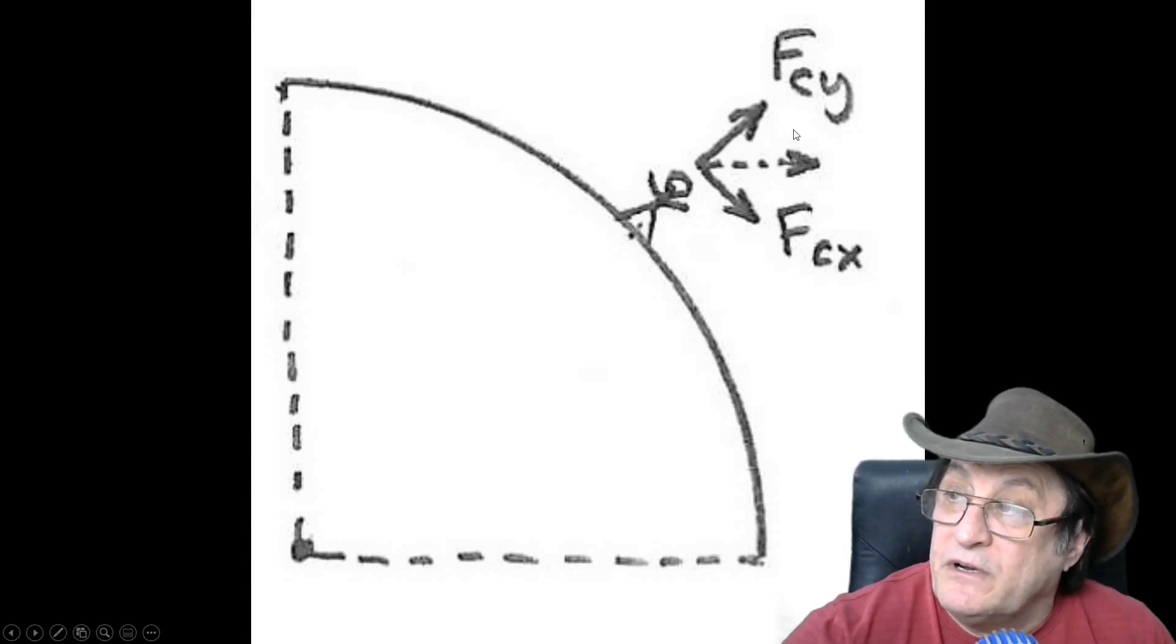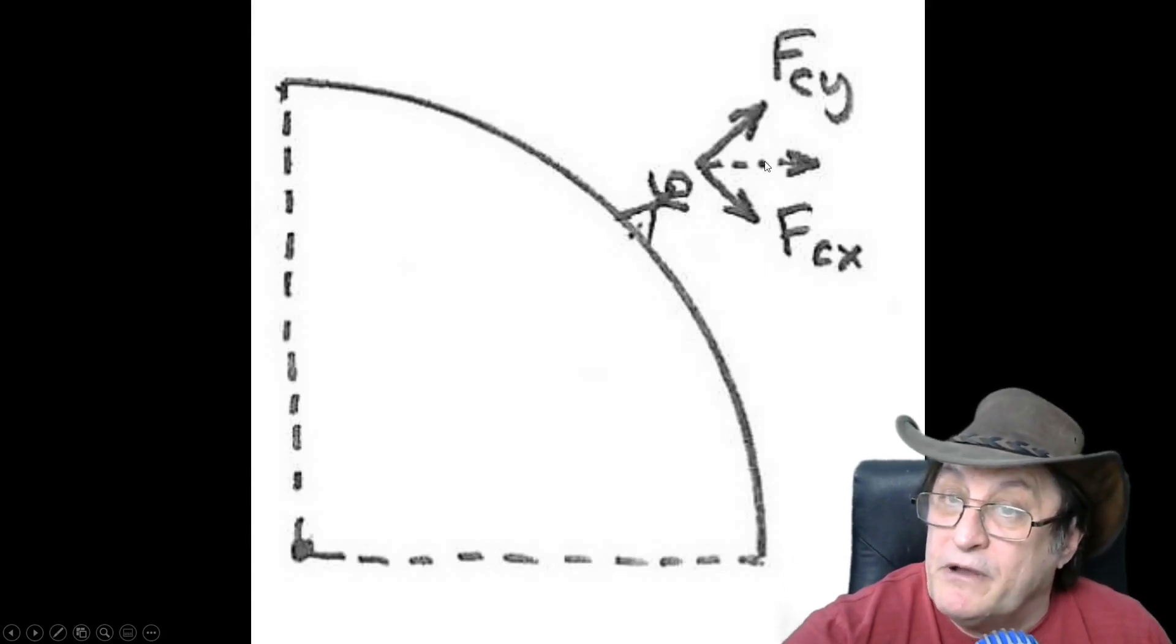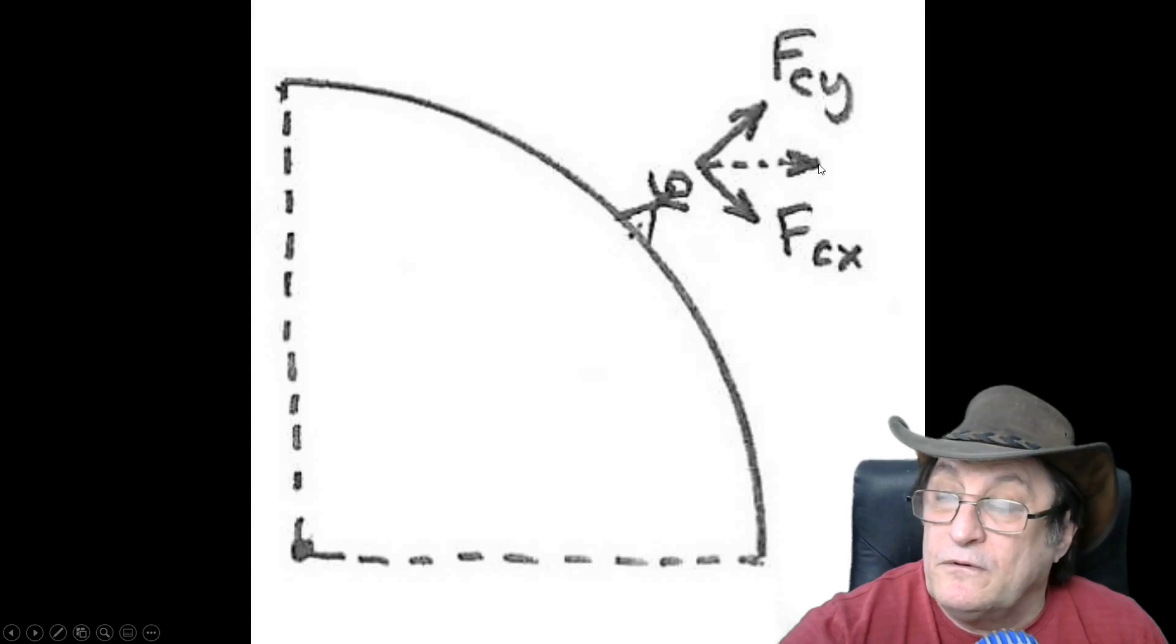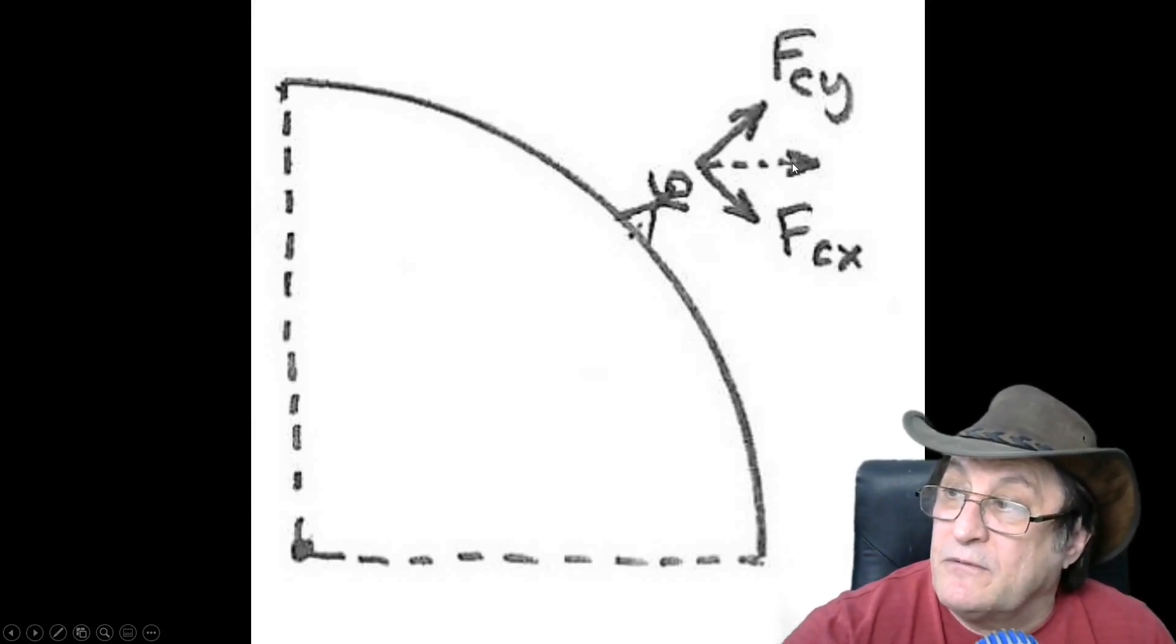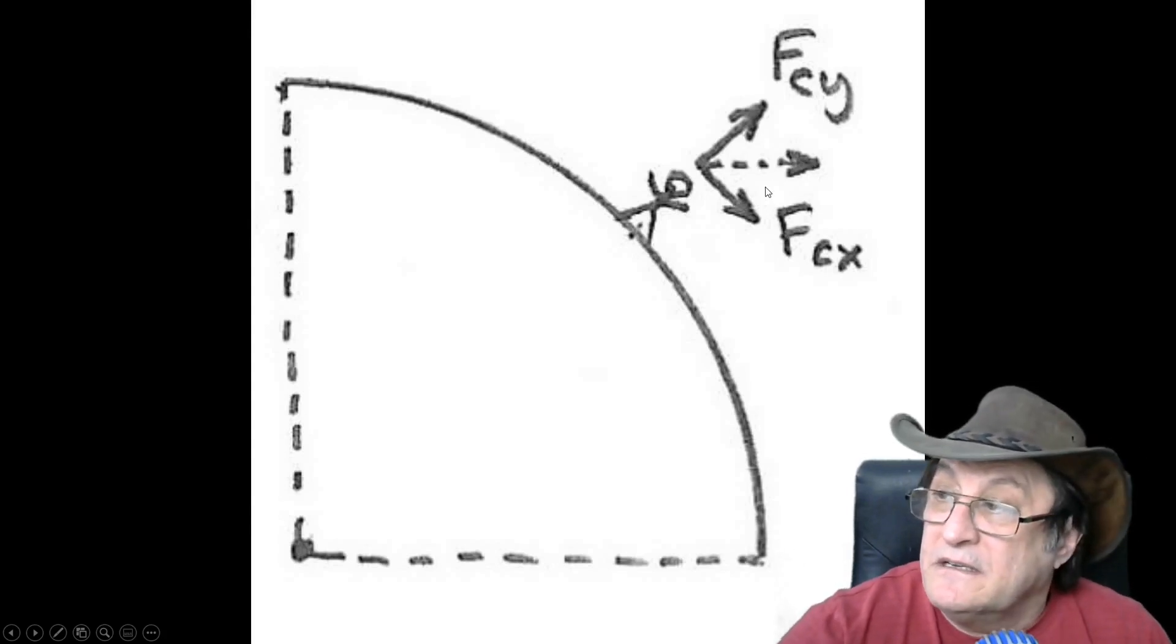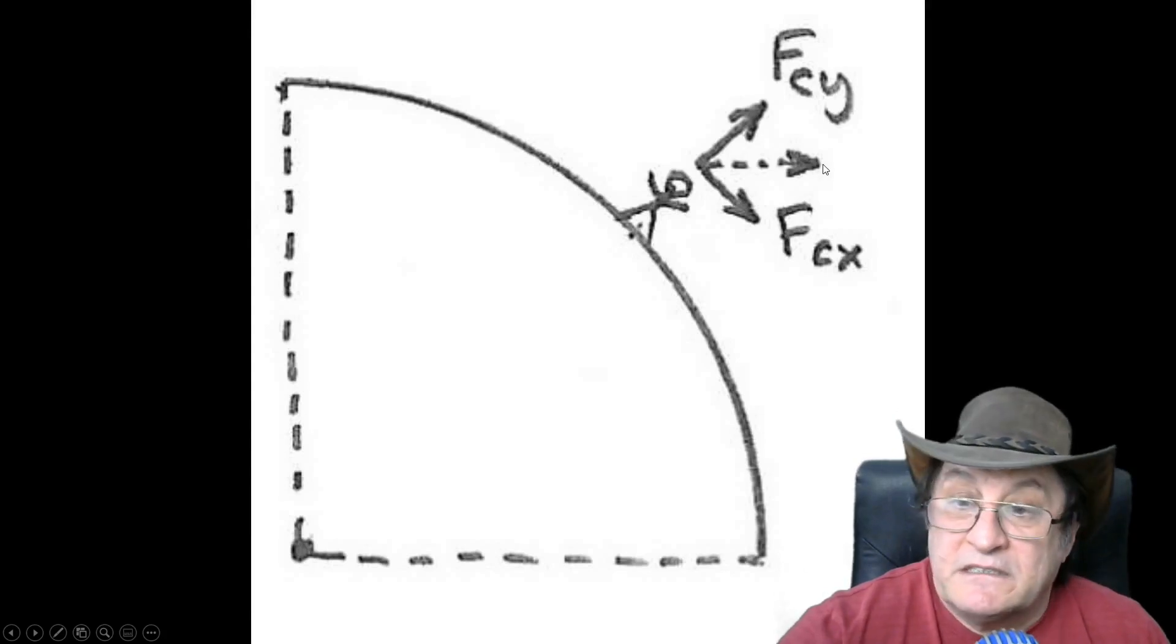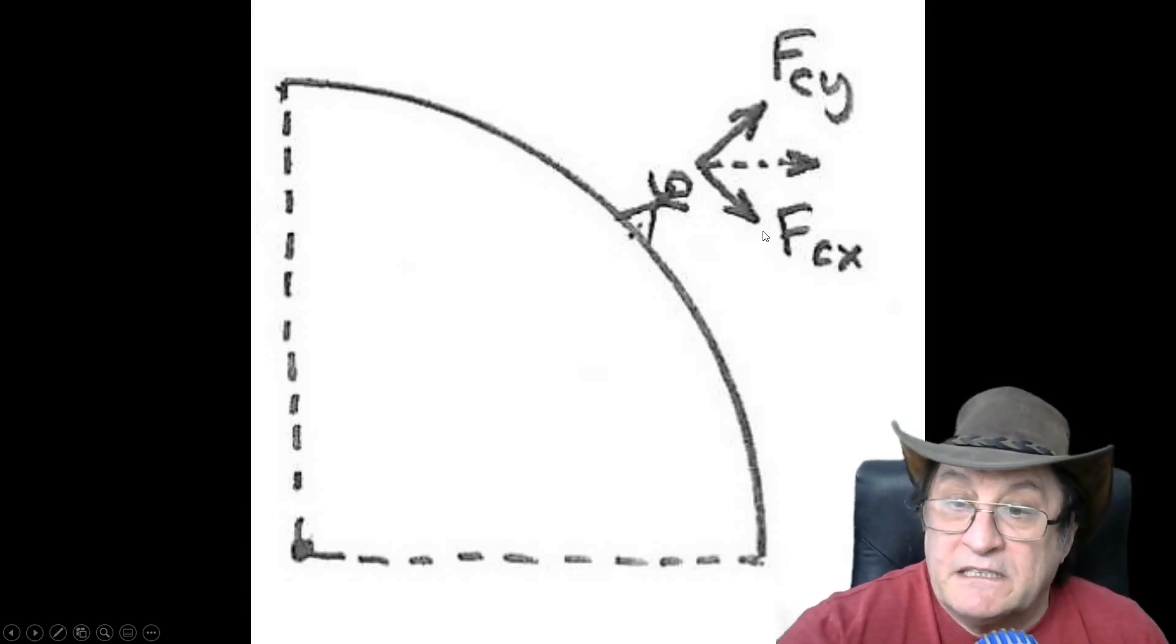Now if you can measure the FCY component, then it's a very simple calculation to work out that there is an FCX component. Because by this diagram here, you have demonstrated that FCX and FCY both make up the centrifugal force. So you can measure FCY and then the relationship between the centrifugal force and FCY is FC cos the angle, cos the latitude. And FCX is FC sin the latitude. So once you have FCY measured, then you have FCX measured.